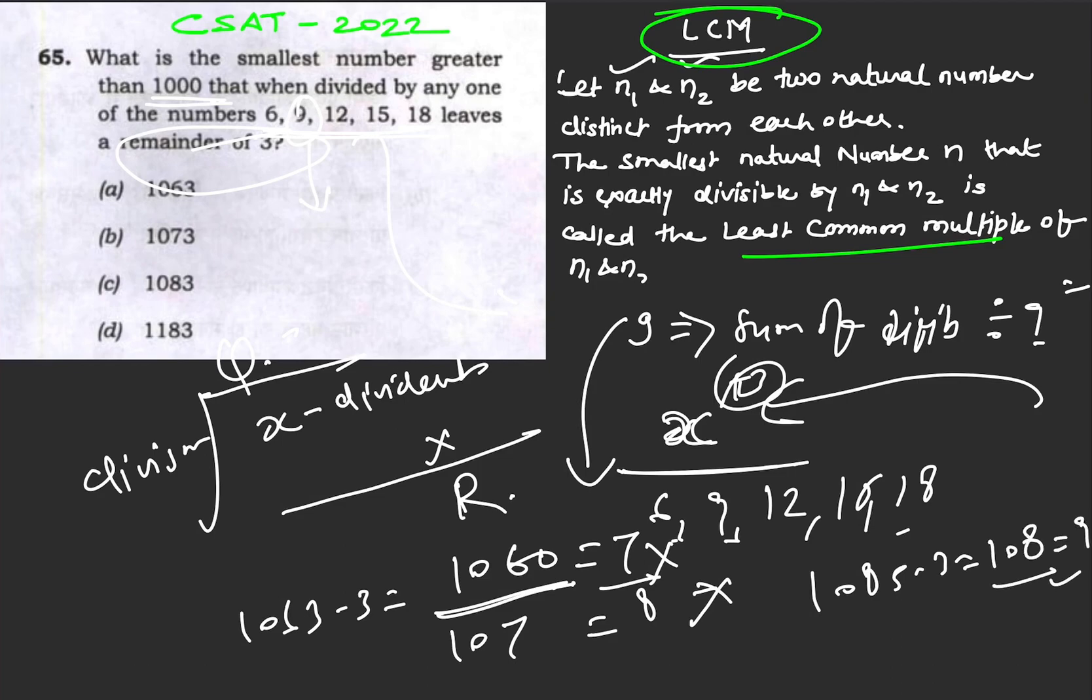1183 is also not divisible by 9. So option C is our answer. This is how we solve the question.